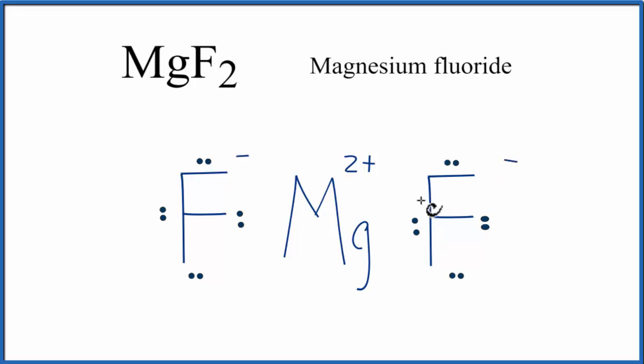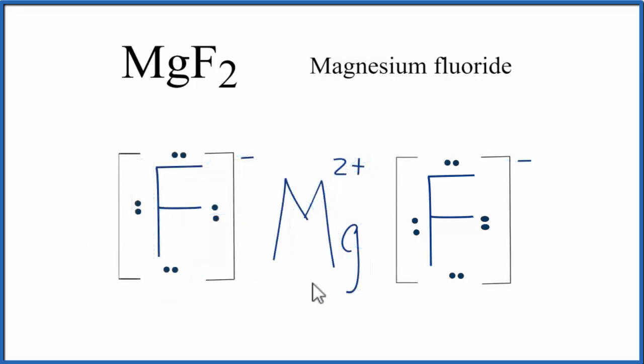So if you add these up here, you'll get 0, because this is a neutral compound. We should put brackets around the fluorines, and you'll sometimes see brackets around the magnesium.